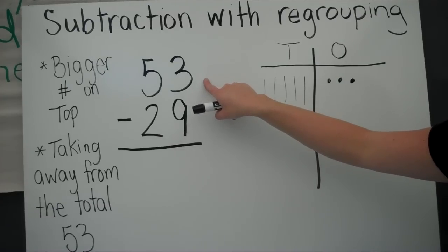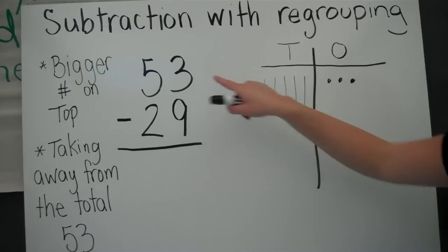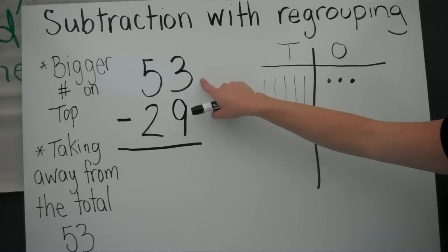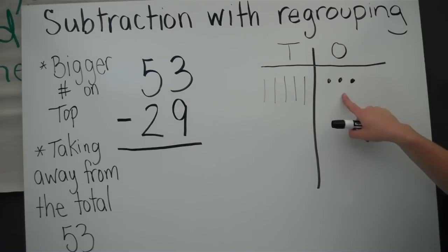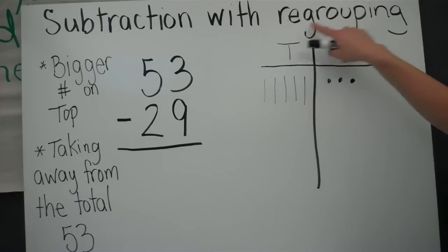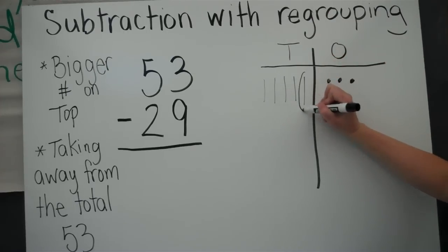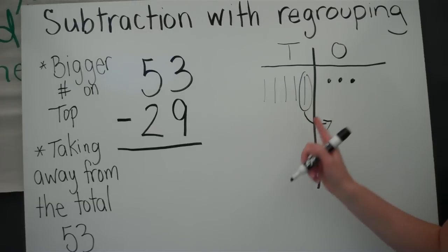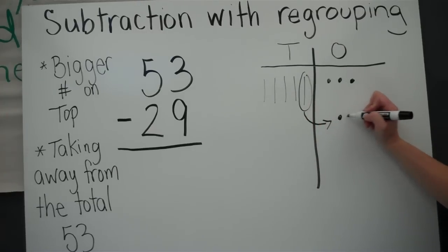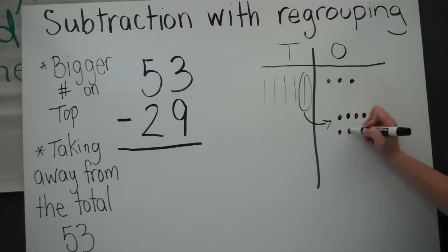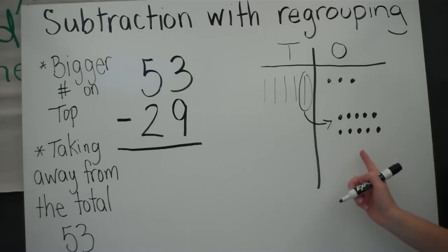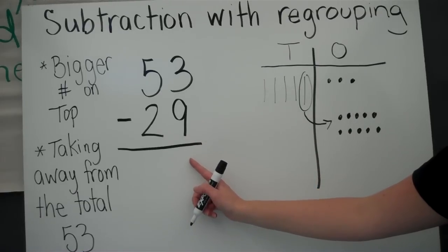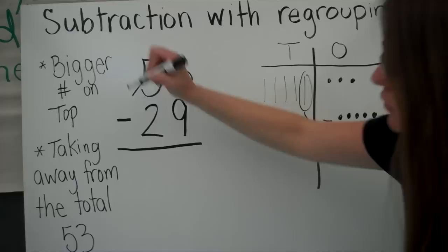Just like in addition, we're going to start in the ones column. I need to take nine from three, but I don't have nine, so now I'm going to regroup. I'm going to take a ten and put it in my ones column. When I do that, I'm adding ten ones. Since I changed my ones column in the blocks, I want to change my ones column in the problem — I took away a ten.